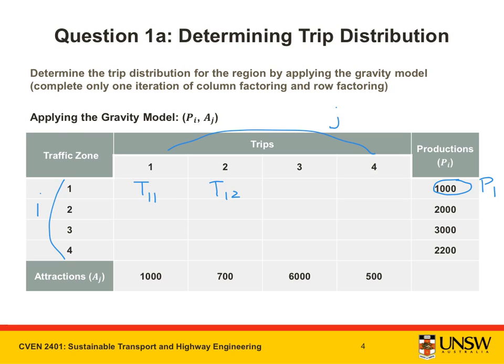From the question, we are given that P1 is 1000. In this way, we also know the values for P2, P3, and P4. If we look down each column, the sum of those trips is equal to the number of trips attracted to that zone. For example, the sum of T11, T21, T31, and T41 gives us all the trips being attracted to zone 1, represented by A1. Once again, we know the attractions for each zone, so we can populate these figures in the table.